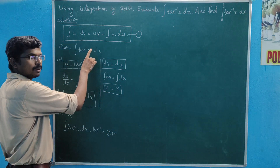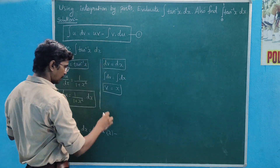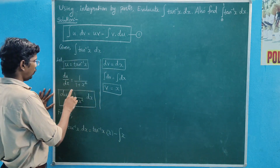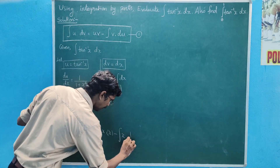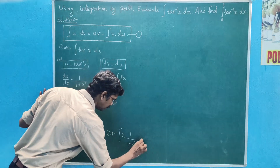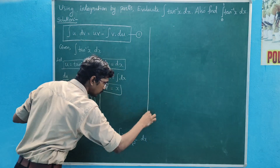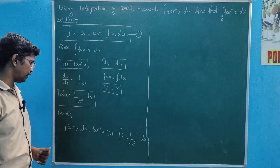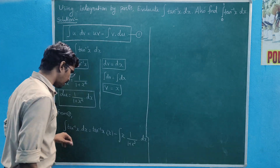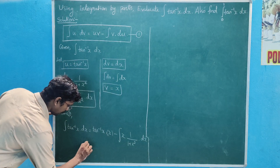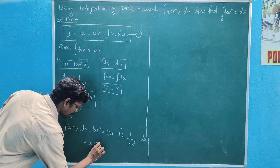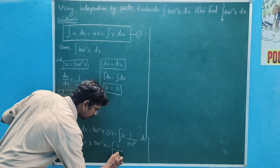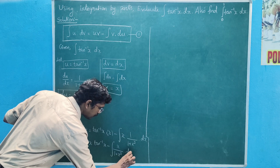v is x, minus — now apply integration by parts — minus integral of v du, where v is x and du is 1 divided by 1 plus x square dx. So we get integral of x divided by 1 plus x square dx.